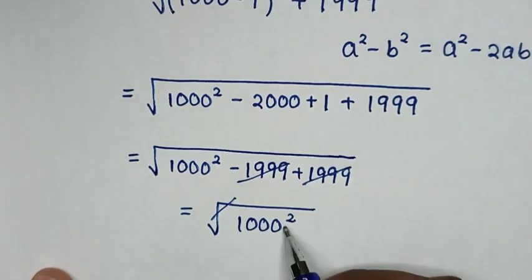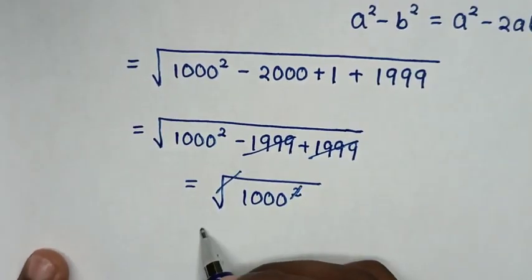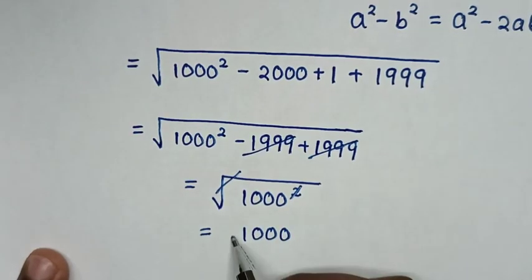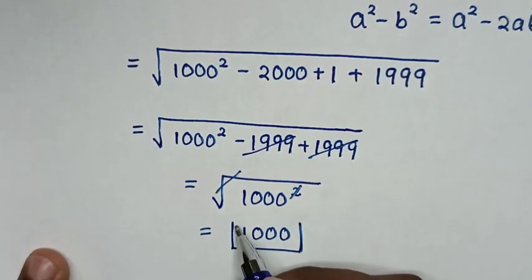So this square root will cancel with square, then it will be equal to 1000. So this is our final answer.